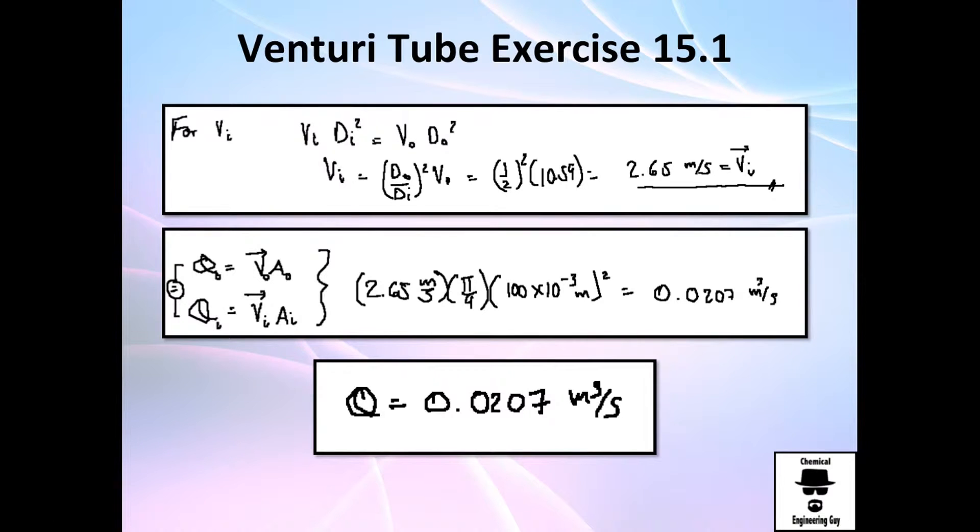They ask you also to calculate the volumetric flow rate. So you can calculate it either in the throat or in the normal pipe. Just be sure to use the velocity of the throat and the area of the throat, or the velocity of the pipe and the area of the pipe. So I actually did the one on the pipe because I think it's more useful.